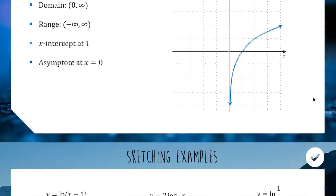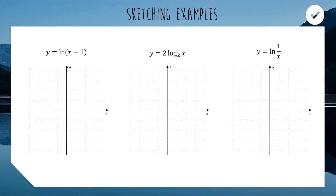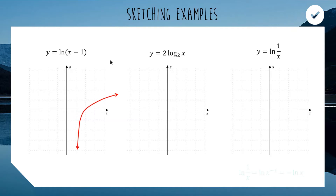Some common transformation questions: sketching y equals ln of x minus 1. When we change the input x to x minus 1, the graph moves one unit to the right. So we take the logarithmic shape and shift it one unit right. Our x-intercept is now 2 and the asymptote is now x equals 1 rather than the y-axis. If it were x plus 1, we would move to the left.